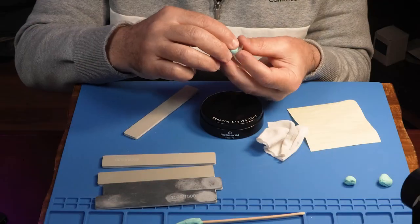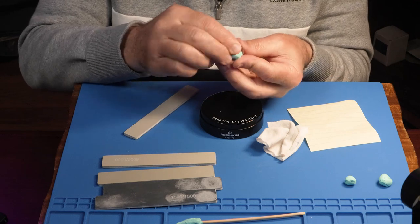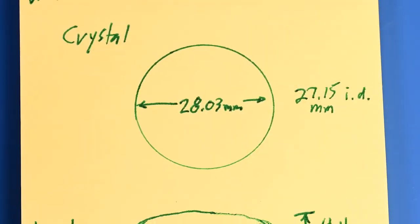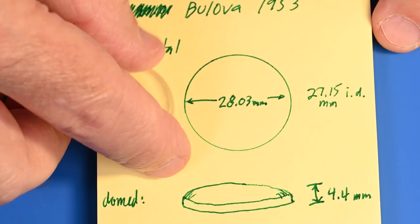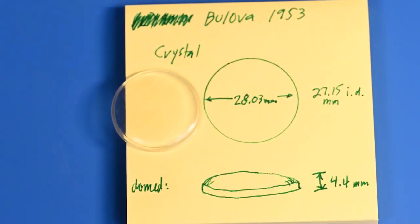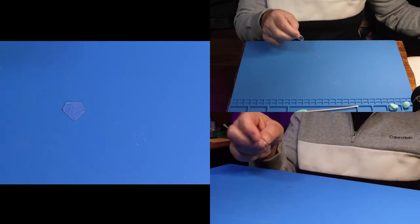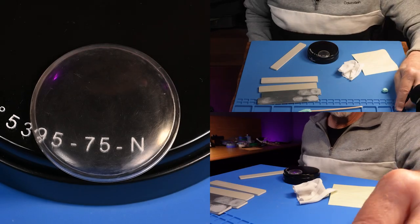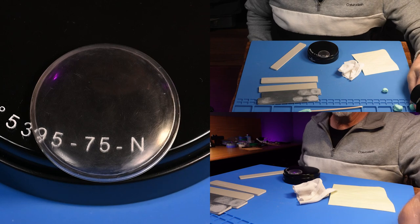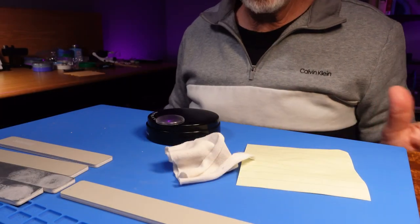I think now would be a good time actually to get some measurements. I've learned from past experience that you should measure for a replacement crystal before you accidentally break one. I meant to do this earlier. We'll keep this in our files. So we're going to clean it up just a little bit more, and I think I'll put it under the microscope. Then we will do Polywatch.